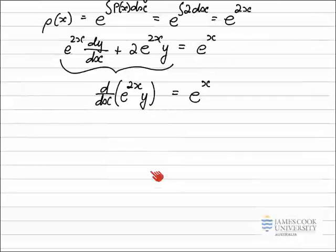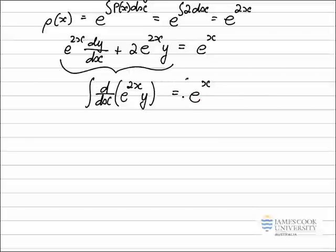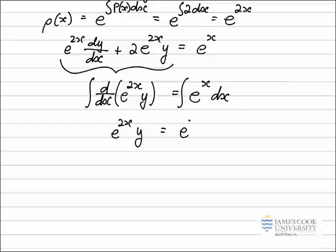Now that we've confirmed the exact derivative, we can integrate both sides. On the left-hand side, the integral of the exact derivative is simply e^(2x) · y. The integral of e^x with respect to x is e^x, and we add a constant of integration C. So the integrating factor has made this integral very straightforward.